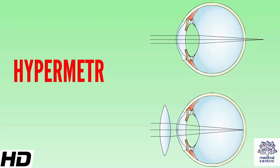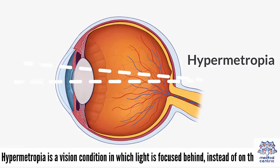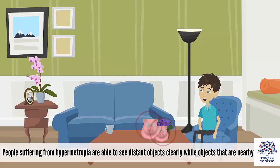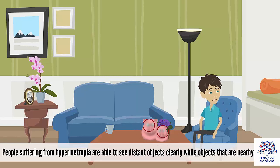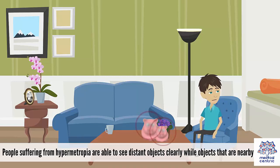Today's topic is hypermetropia. Hypermetropia is a vision condition in which light is focused behind instead of on the retina. People suffering from hypermetropia are able to see distant objects clearly, while objects that are nearby are blurry.